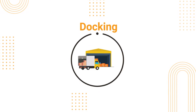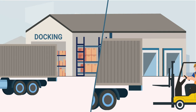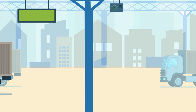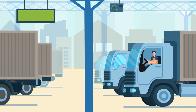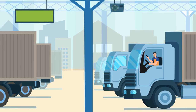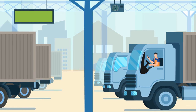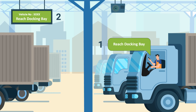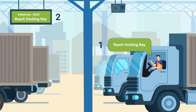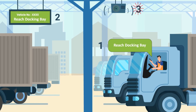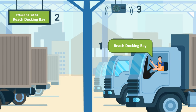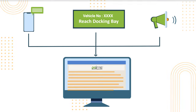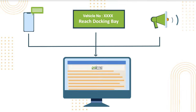Before starting the unloading process, the vehicle is docked and prepared for unloading. In case the vehicle is in the parking lot, the driver is notified through the following modes: a message is sent to the driver's mobile, a notification is displayed in the parking lot or driver's waiting area, and an announcement is made through a public address system. All of these means of communication are controlled through the system.